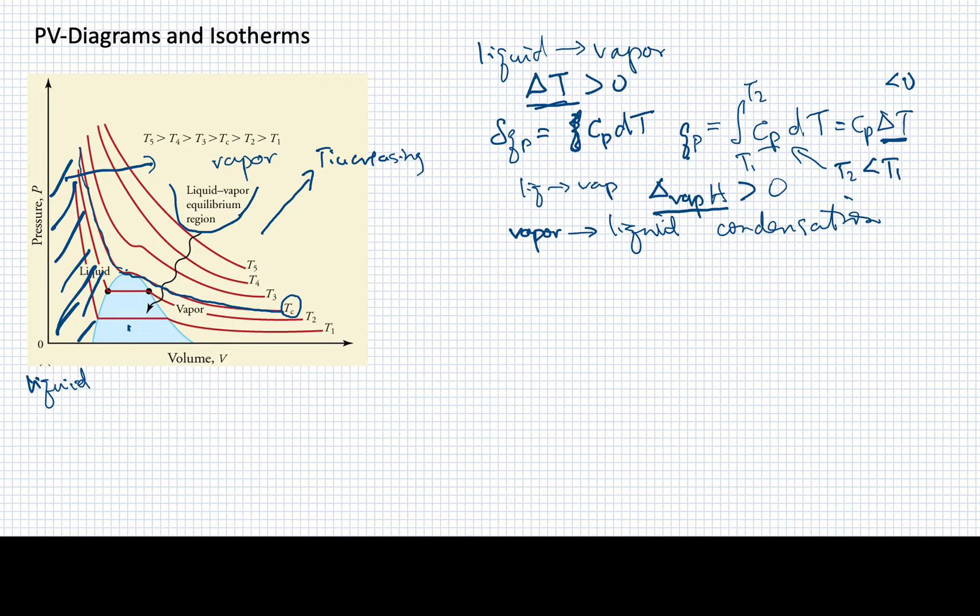Now, there are a few other features on this PV diagram that I wanted to point out. One is this coexistence region in blue, the coexistence area. All right, this is an area in which the liquid and the vapor are in equilibrium with one another. So one way we can read this is if we're on an isotherm, and let's say we're on this very first isotherm, T1, and we go across here and we first encounter this coexistence region here, and then we leave the coexistence region here. Is there something we can learn about those two points?